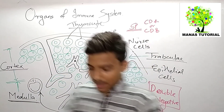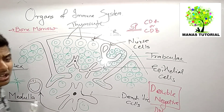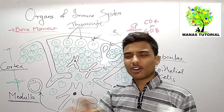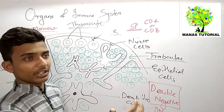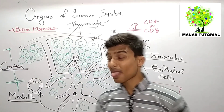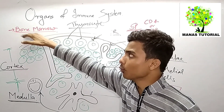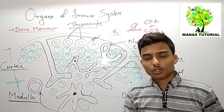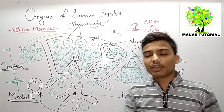The second primary lymphoid organ is the bone marrow. The bone marrow is the site of B cell development in mice, humans, and almost all animals. However, in birds, B cells mature in another organ known as the Bursa of Fabricius. The process of maturation is similar: hematopoietic cells in the bone marrow acquire markers and become mature B cells. B cells that are self-reactive to our own cells are eliminated by apoptosis, and then the mature B cells are released.